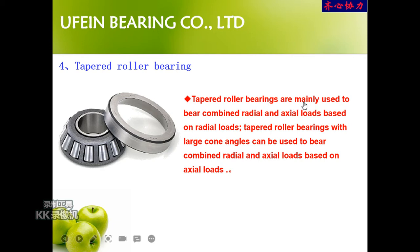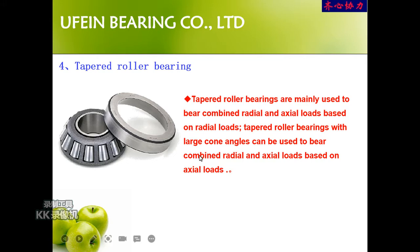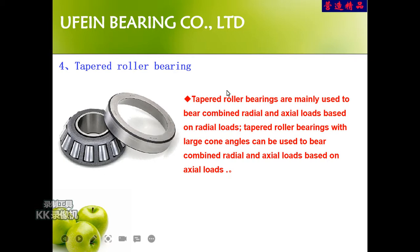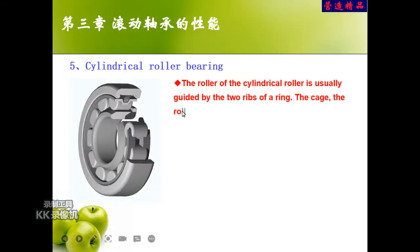Next are tapered roller bearings. Tapered roller bearings are mainly used to bear combined radial and axial loads based on radial loads. Those with large cone angles can also bear combined loads based on axial loads. These bearings are widely used in industry and especially in automobiles — heavy trucks and vehicles like trains use them for their wheels. The roller and cage are both tapered in design.